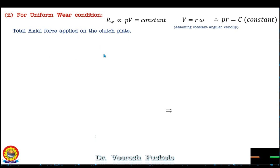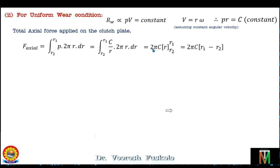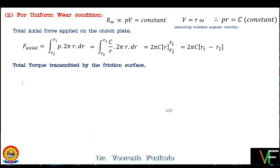The total axial force for uniform wear is calculated by integrating from r2 to r1: F_axial = ∫ p·2πr·dr. Substituting p = c/r, we get ∫ (c/r)·2πr·dr = 2π·c·∫dr from r2 to r1, since r cancels. This gives the total axial force applied on the clutch plate as F_axial = 2π·c·(r1 − r2) for the uniform wear condition.